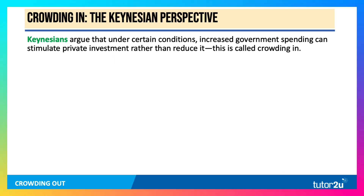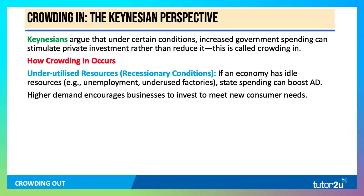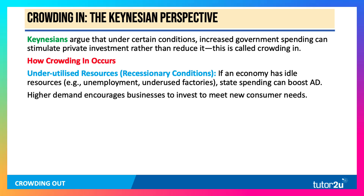The counter view is a Keynesian argument that says that under certain conditions, increased government spending can stimulate investment rather than crowd it out. Keynesians call that crowding in. So how does crowding in occur? One argument is it depends when you're borrowing the money. If you're in a recession — if an economy has suffered a demand shock, for example — it has spare resources.